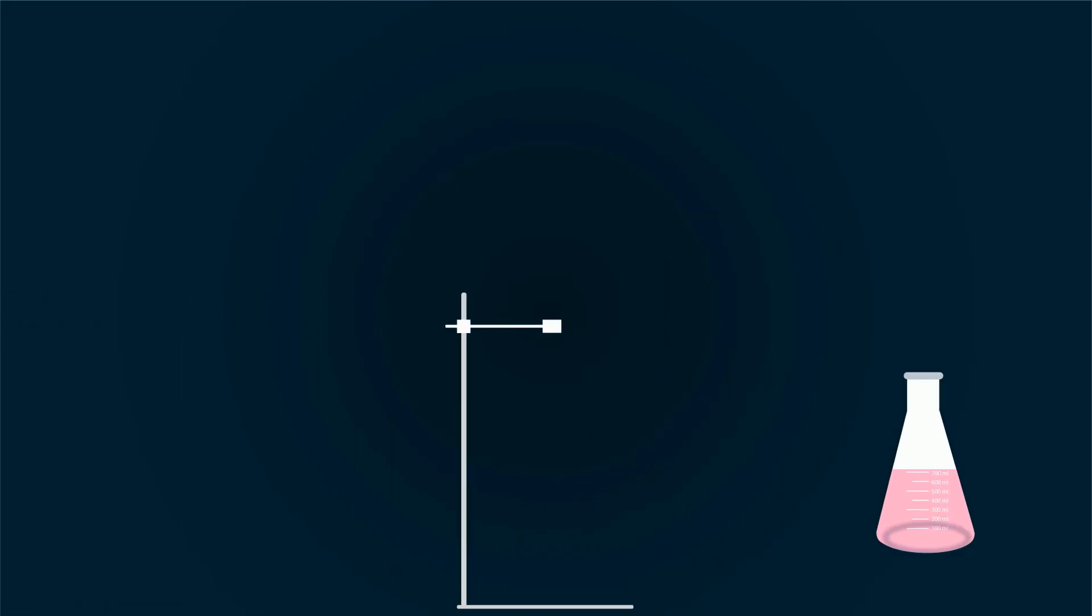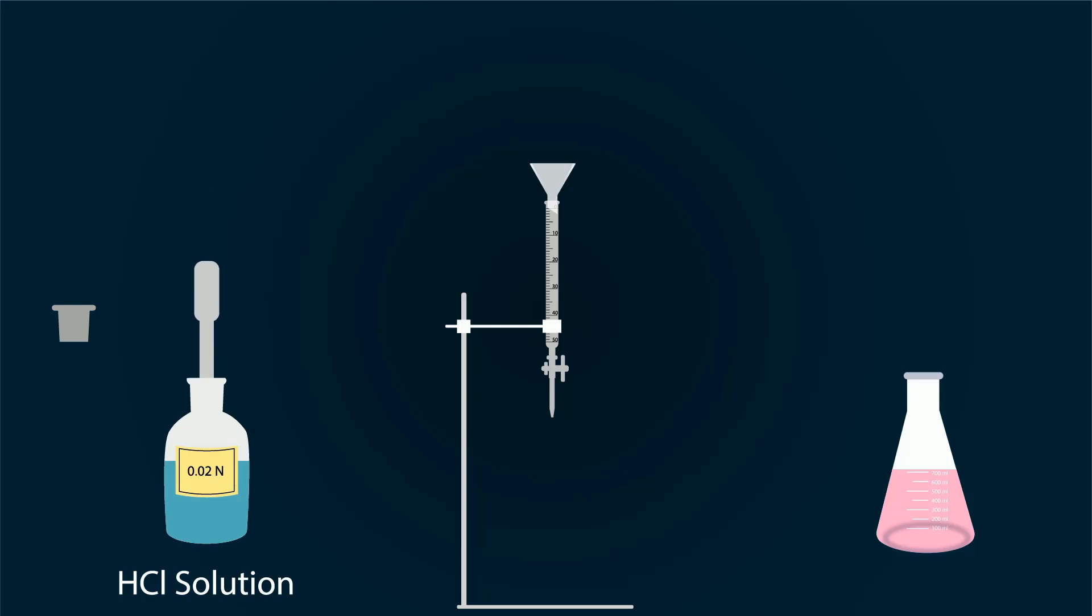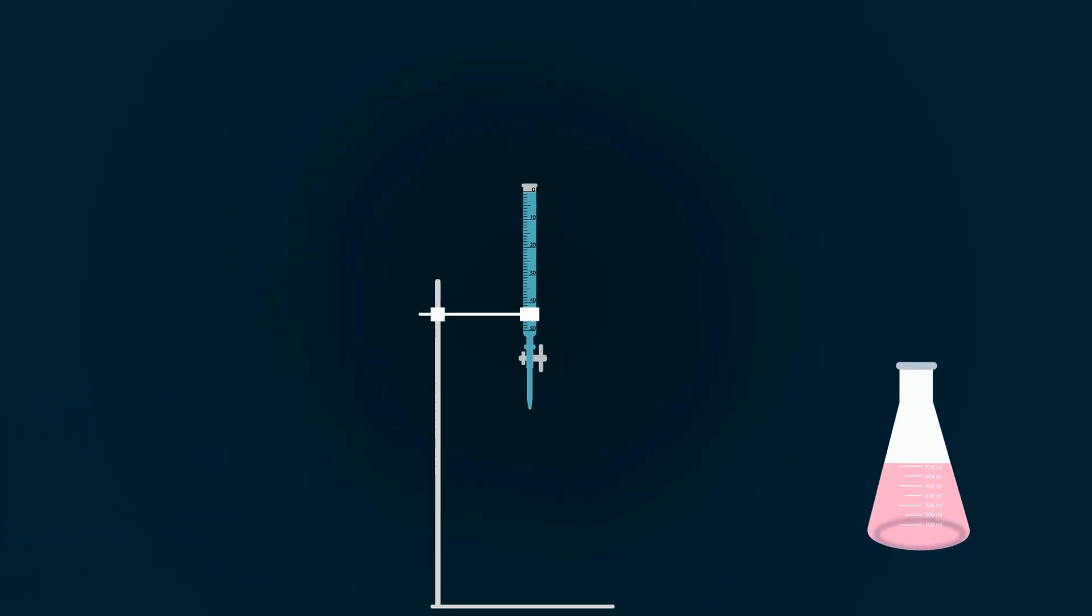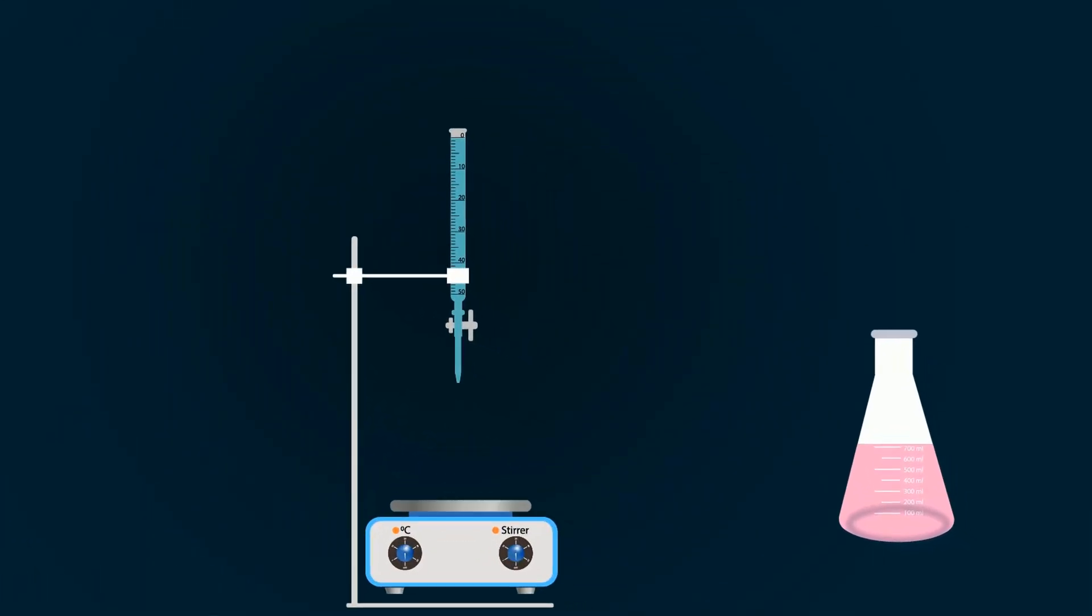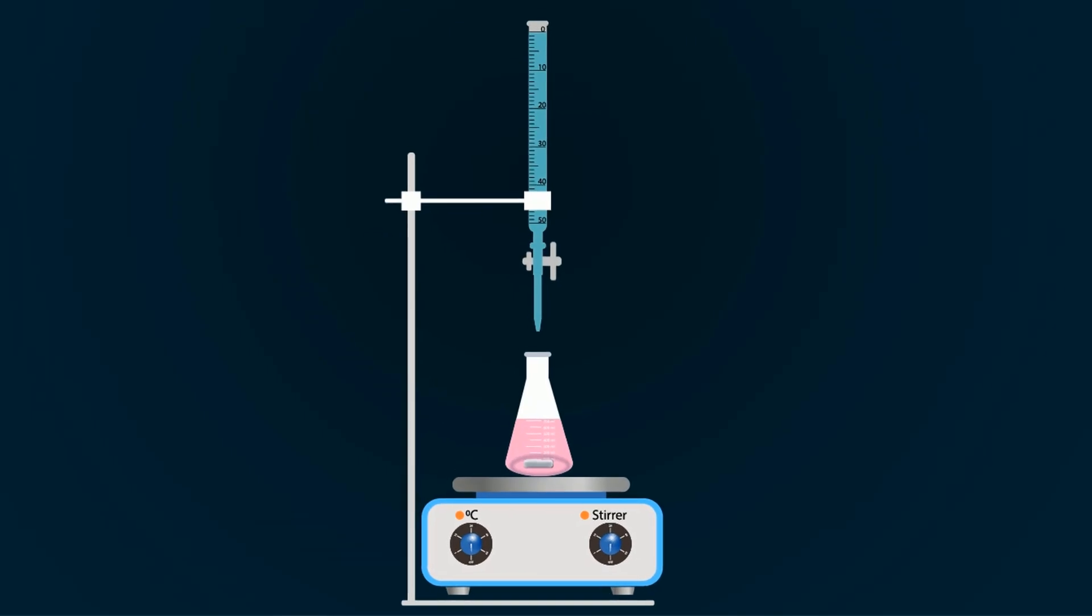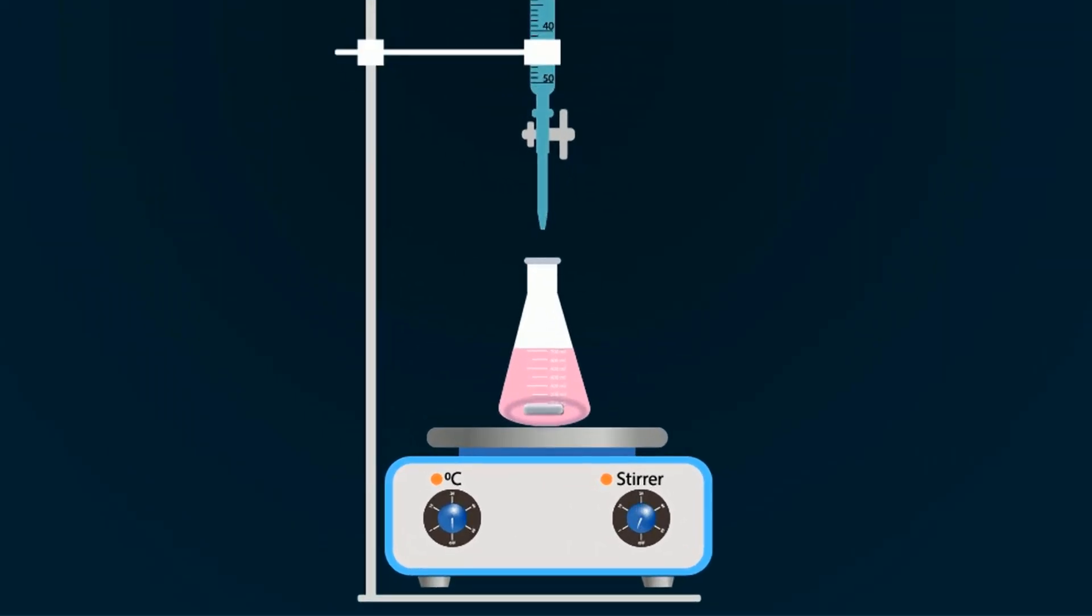For titration, take a stand and add burette on it and don't forget to put funnel. Fill the burette with 0.02 normal HCl solution up to the zero point. Adjust the magnetic stirrer under the burette and add magnetic bar into the conical flask. Put the conical flask on the magnetic stirrer and turn it on for homogenous mixing.